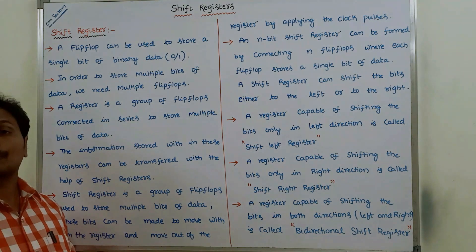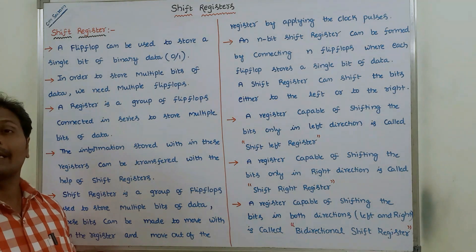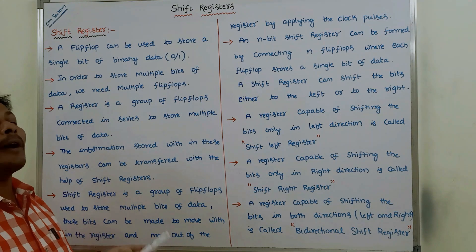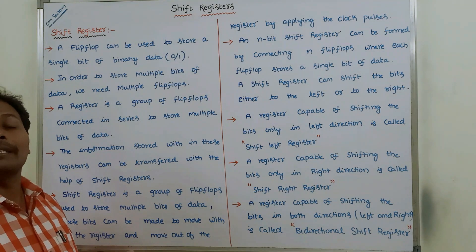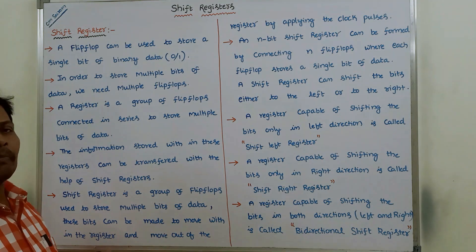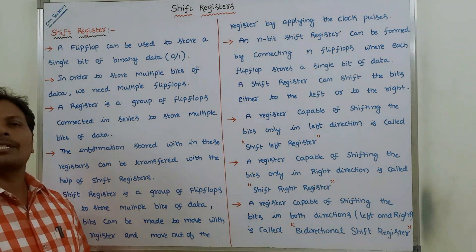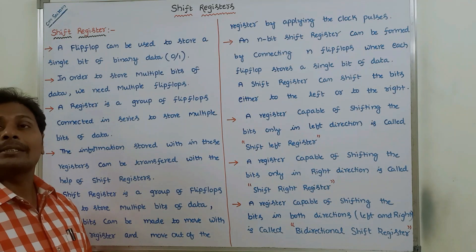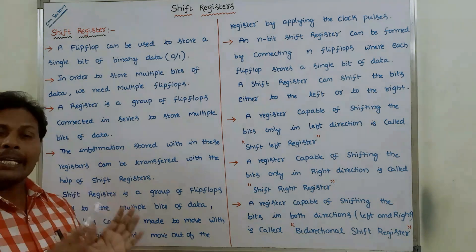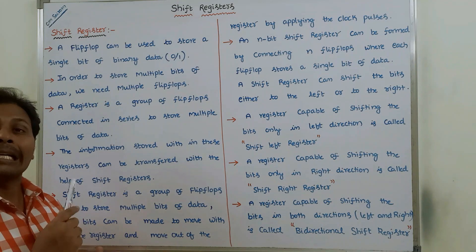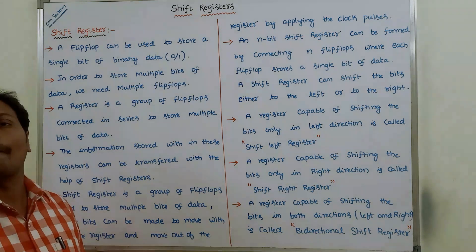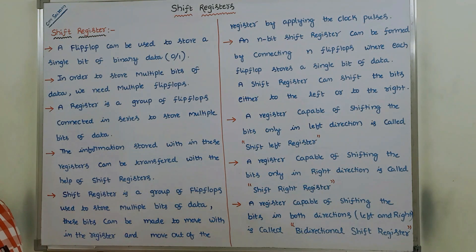Whatever data is stored within the registers can be moved either in left direction or in right direction with the help of shift registers by applying clock pulses. A shift register is a register used for storing multiple bits of data, and that data can be moved either in left or right direction by applying clock pulses.